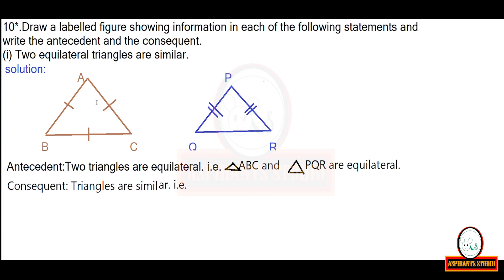There is a symbol for similarity — you have to use that symbol. Write: triangle ABC is similar to triangle PQR, using the proper notation for similarity.